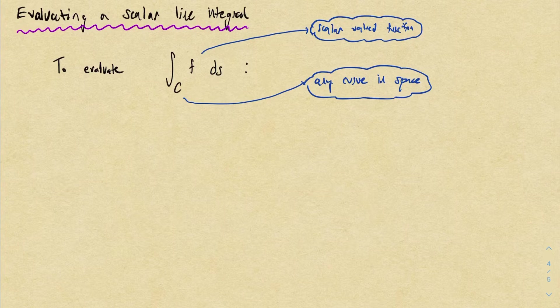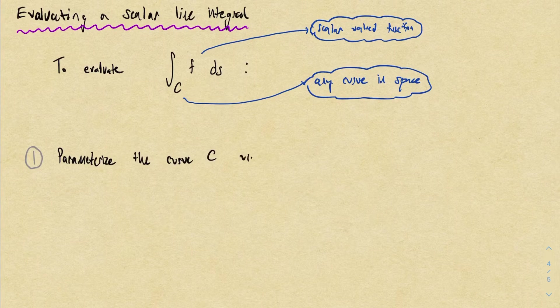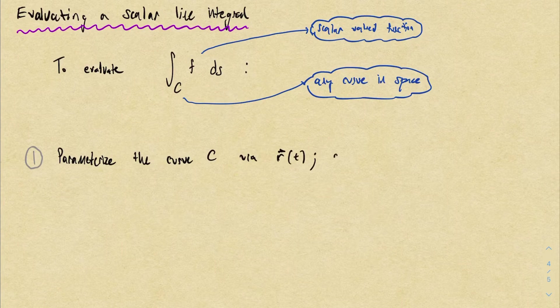So how do we actually evaluate one of these things? I'd say there are three main steps. The first, which is the most important one, you need to parameterize the curve. In some problems this may be given to you, but in other problems you may just be told geometrically what the curve looks like. So your first step will be to come up with some vector valued function r(t) and a parameter interval t from a to b which traces out this curve.